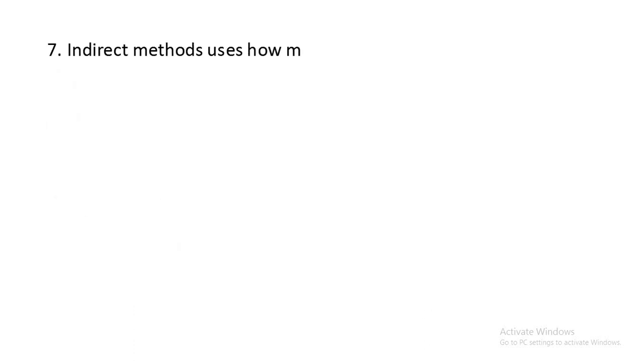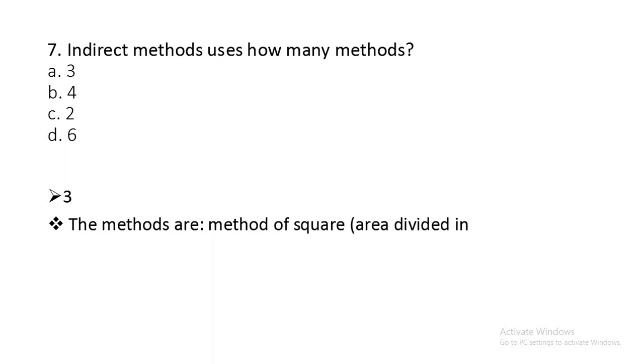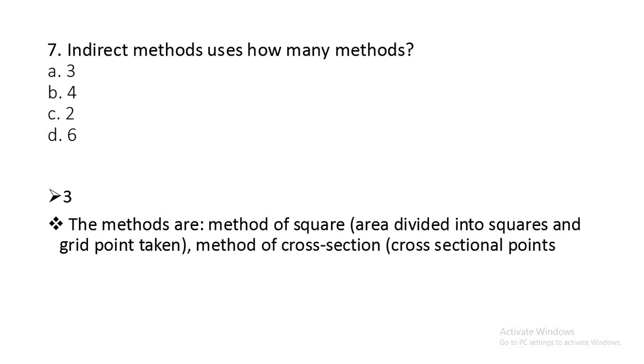Question number seven: Indirect methods use how many methods? Three, four, two, or six? Three is the right answer. The methods are: method of square in which the area is divided into squares and grid points are taken, method of cross section in which the cross sectional points are taken, and tachymetric method which is adapted for very steep hills.